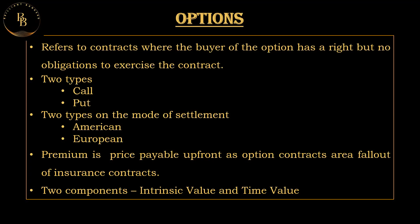There are two types of options: call options and put options. A call option gives the holder the right to buy an underlying asset at a specified price before or at the expiration date. A put option gives the holder the right to sell an underlying asset at a specified price before or at the expiration date. So the call option is to buy and the put option is to sell an underlying asset at a strike price before or at expiration.